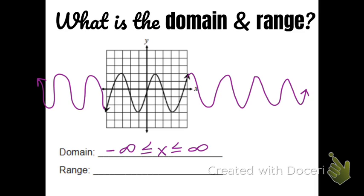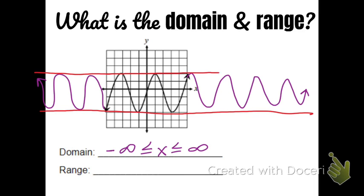The range is where the graph goes up and down, and it does have a stopping point. It's not going below a certain line and not going above another. The whole graph sits between those two red lines, going down to negative 3 and up to positive 2. So the y coordinates are scrunched in between negative 3 and 2.